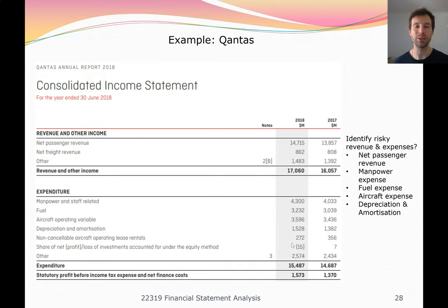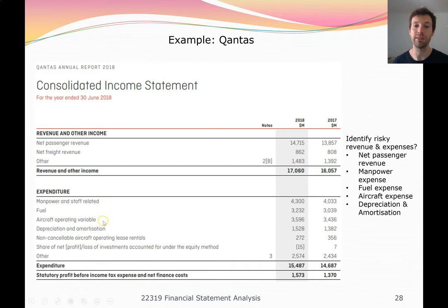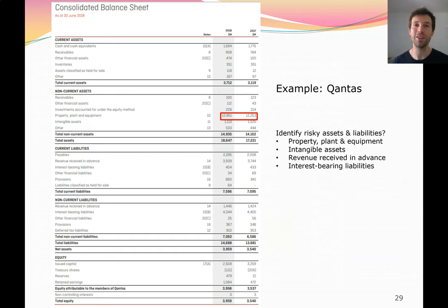Let's look at a quick example using Qantas's 2018 financial statements. On the income statement, net passenger revenue is clearly a key number, so revenue recognition for passenger revenue is a key policy. Wages, manpower, fuel, and aircraft operating variable costs are also important, and depreciation represents a significant portion of revenues. On the balance sheet, property, plant and equipment is one of Qantas's largest assets, so we'll spend time analyzing how they account for that.